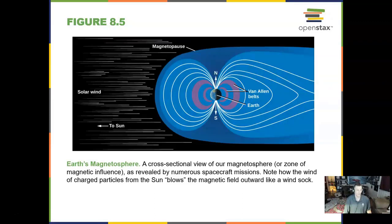We have a magnetosphere due to our outermost core — the liquid part — not quite as dense as the iron in the middle. But we do have a magnetic field. We've mapped it out pretty well, and even still today we can find some improvements to making this a model.